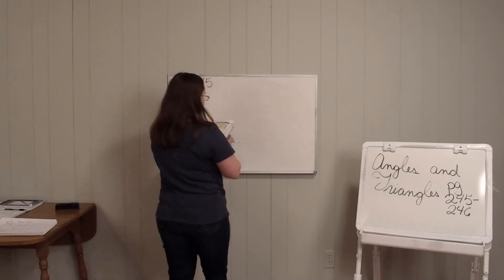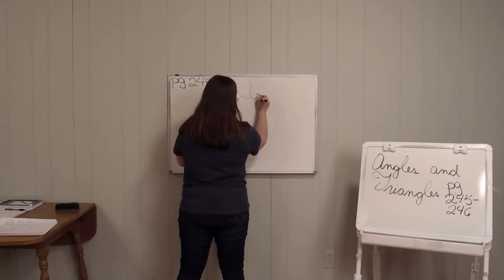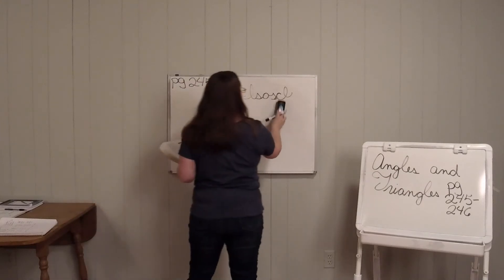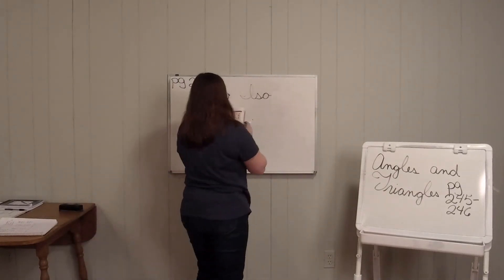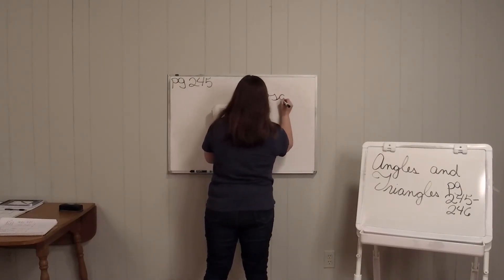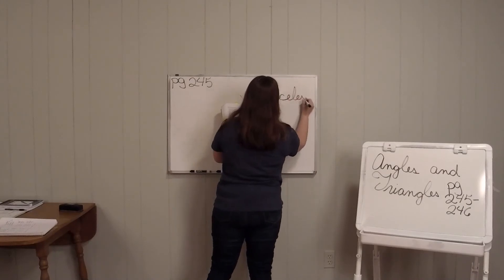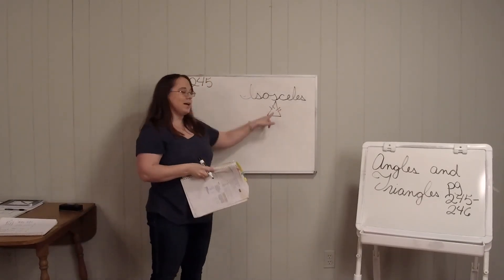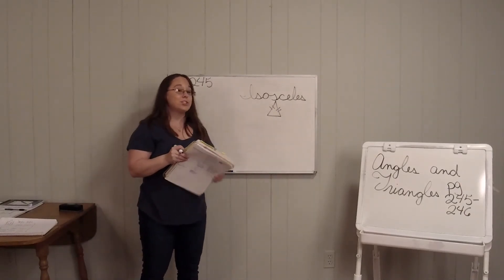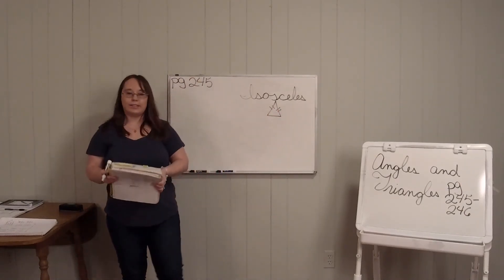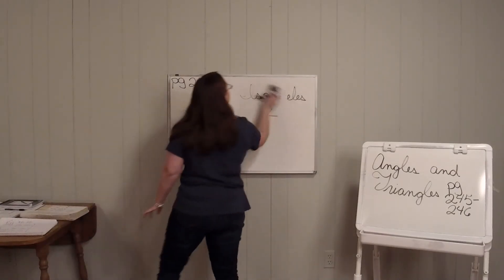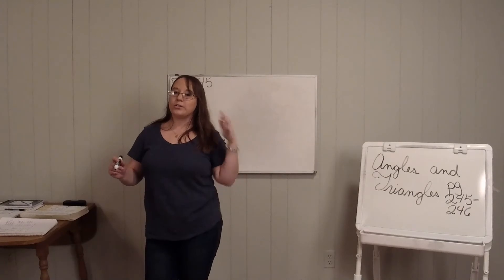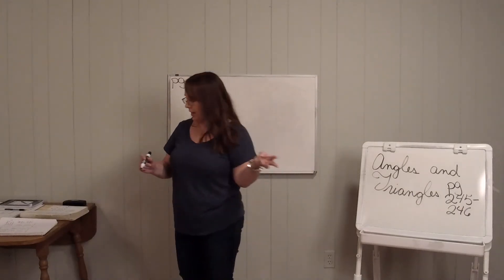That one's called an isosceles triangle, and it only has two congruent sides — not all the sides. So an isosceles triangle has two congruent sides. So you have a right triangle, an isosceles triangle with two congruent sides, and an equilateral triangle with three equal sides and three equal vertices.